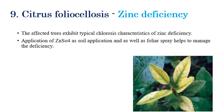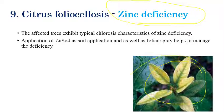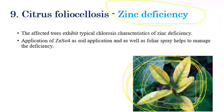Citrus follioclosis is a nutritional disorder caused by zinc deficiency. The main symptoms are chlorosis with typical chlorosis patterns on leaves, and slight reduction in the length and breadth of leaves. For management, soil application or foliar application of zinc sulfate can greatly reduce the incidence.